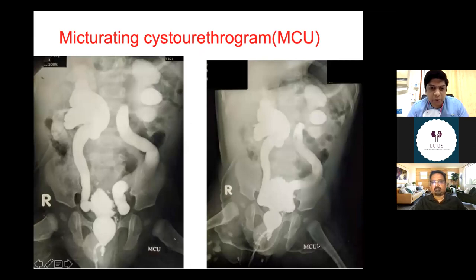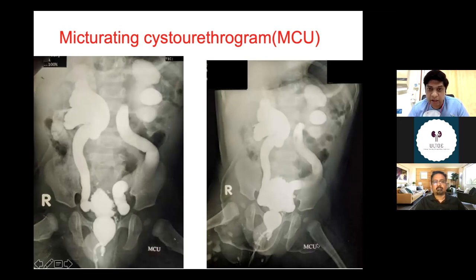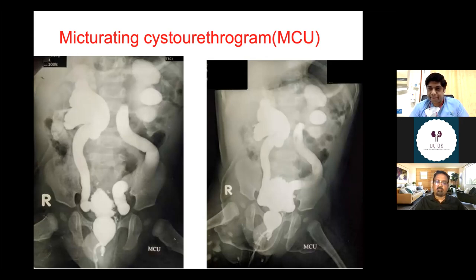The MCU findings: both kidneys were normal size but the pelvicalyceal system was dilated, more on the left side; both ureters were dilated; the urinary bladder wall was thickened and irregular — bilateral hydroureteronephrosis with cystitis. The MCU shows dilation of the posterior urethra with an abrupt cutoff, small-capacity irregular bladder, and bilateral grade 5 vesicoureteric reflux.